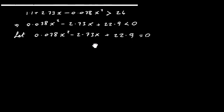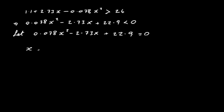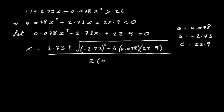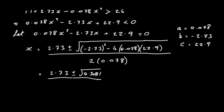Using the quadratic formula, with A equal to 0.078, B equal to minus 2.73, and C equal to 22.9: X equals minus B, so 2.73, plus or minus the square root of B squared minus 4AC, all divided by 2A. That gives X equals 2.73 plus or minus the square root of 0.3081, divided by 0.156. This gives us our two values for X.